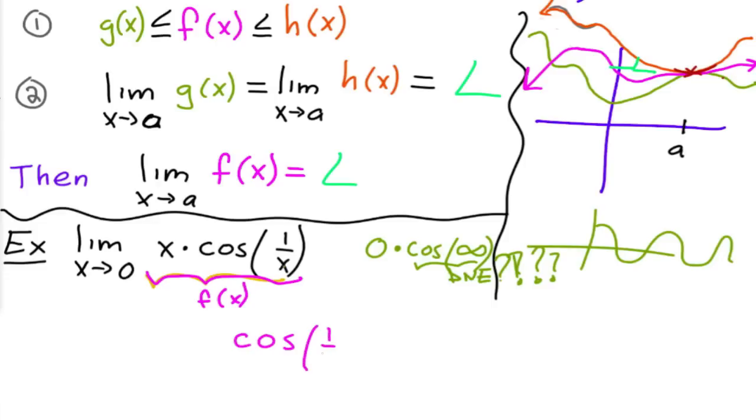Now I'm looking for the two functions that it's surrounded by. A good starting point is to say, hey well I know that cosine of 1 over x, no matter what, is going to have to be between 1 and negative 1.